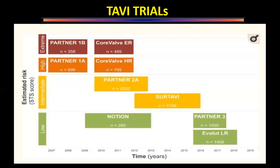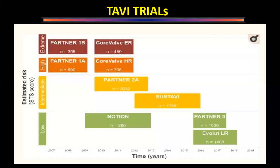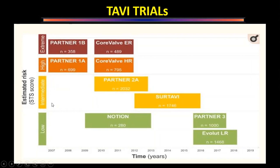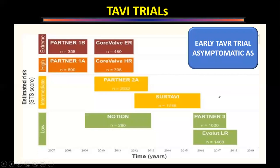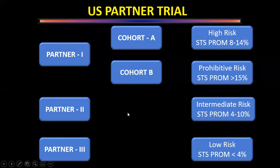Key TAVI clinical trials: Partner 1 and CoreValve Extreme Risk studied prohibitive/very high risk patients. Partner 1A studied high risk patients; Partner 1B studied prohibitive risk patients. For intermediate risk: Partner 2 and Evolut trials. For low risk: Notion trial, Partner 3 trial, and Evolut LR. The EARLY TAVR trial is ongoing for asymptomatic aortic stenosis. Partner trials are favourite MCQ topics. Partner 1 had Cohort A (high risk, STS PROM >8–14%) and Cohort B (prohibitive risk, STS PROM >15%).